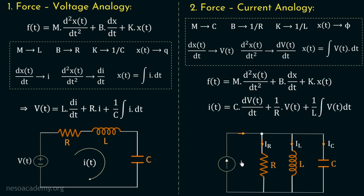We can draw the electric circuit for this equation: the total current is i(t), the voltage across all three elements is v(t), the current through the resistor is v(t)/R, the current through the inductor is (1/L)∫v(t) dt, and the current through the capacitor is C(dv/dt). The total current i(t) equals the sum of all three currents. This is the electrical analogous network of the given physical system according to force-current analogy, where the force in the mechanical system is replaced with a current source.